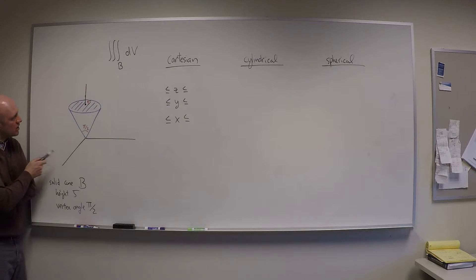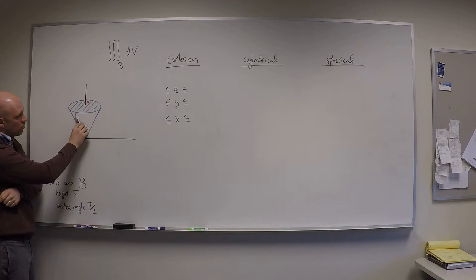This cone, this example that I'm going to do, I'm going to let it have a height of 5, so the z value is 5 here, and I'll let it have a vertex angle of pi over 2, and that means that pi over 2 is the angle from one side of the cone to the other as I cut across the middle of it.